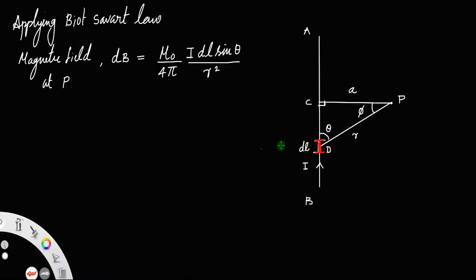The angle is between dL and the distance vector dP, and r square is the distance from the center of this section to the point P. Let us call this as equation number 1.